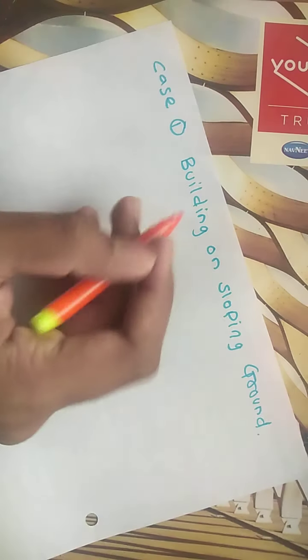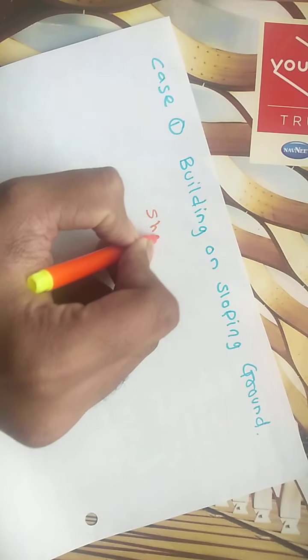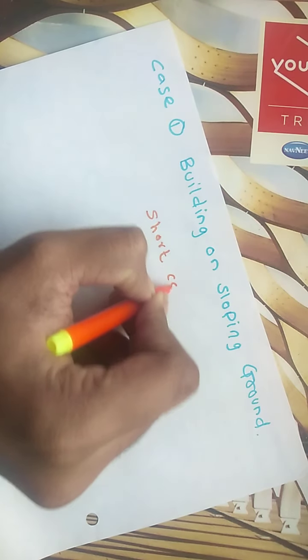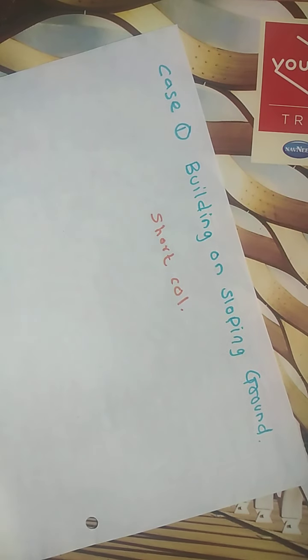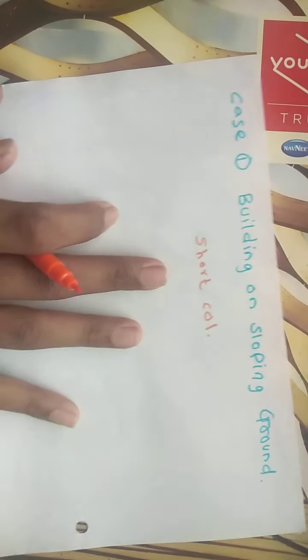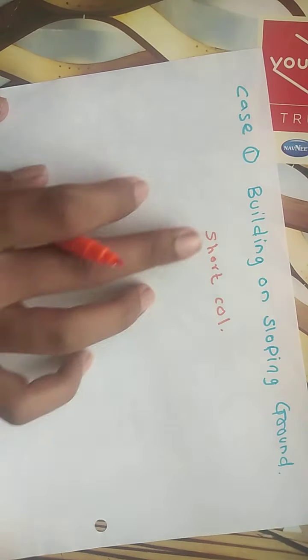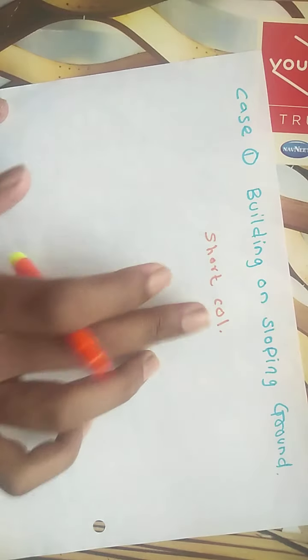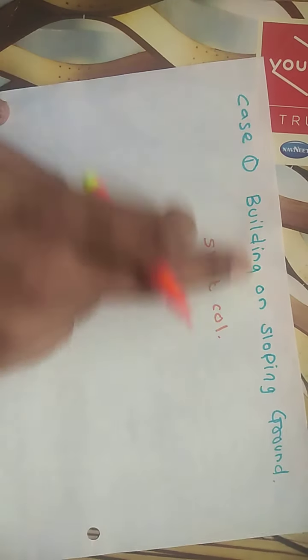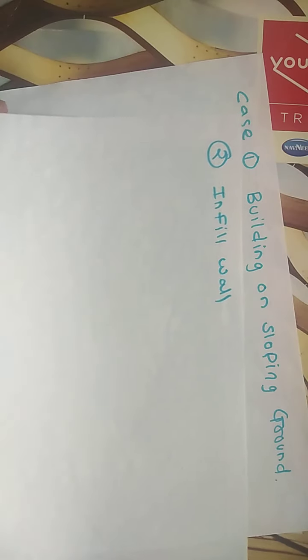Welcome to another interesting video on earthquake engineering. Today we'd like to talk about why short columns fail first in earthquakes. There is a probability that short columns will fail first, so we will discuss why this happens. When short column conditions arise, first one is building on sloping ground. There is another condition with infill walls.